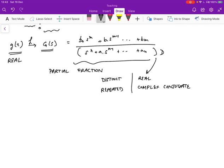And so we have to look into sort of four cases: real distinct, real repeated, complex conjugate distinct, and complex conjugate repeated.